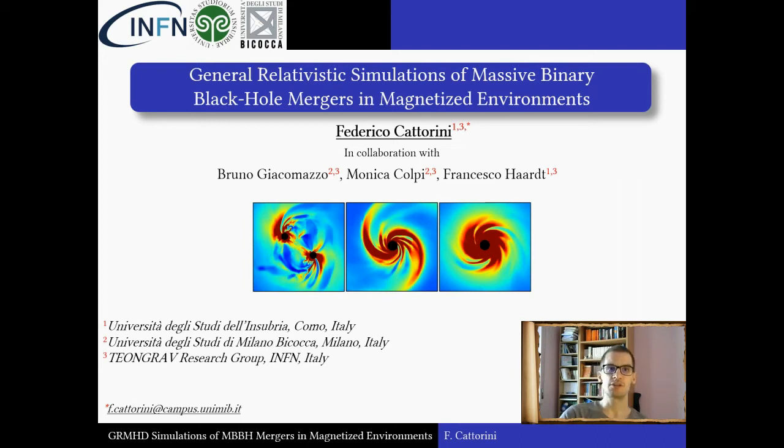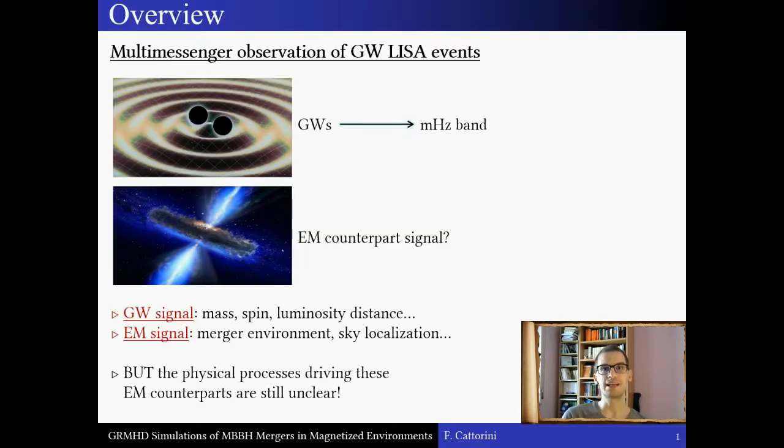This work is motivated by the possibility of future multi-messenger observations of a class of LISA gravitational wave events, namely the late inspiral and coalescence of massive black hole binaries. These low-frequency gravitational waves will yield detailed information on the merging black holes, such as their masses, their spins, distances. And if we had the chance to observe those powerful events in the electromagnetic window as well, we could get some precious insight on their environment, we could better determine their sky localization, and more.